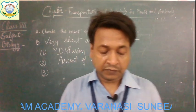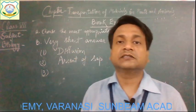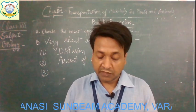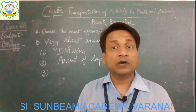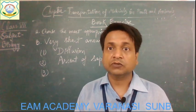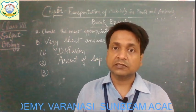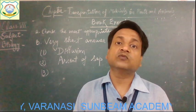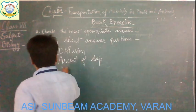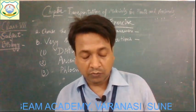Question number three: Which tissue is involved in transportation of food in plants? Plants have two tissues for transportation: xylem tissues and phloem tissues. Xylem tissues are responsible for transportation of water and dissolved substances, and phloem tissues are responsible for the movement of food or glucose. The answer is phloem tissues.